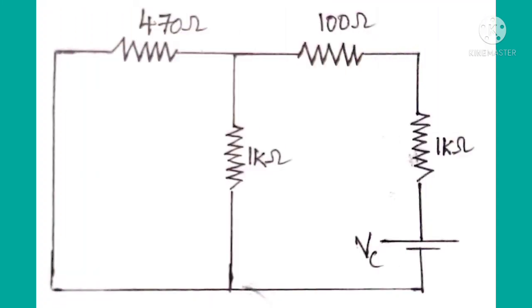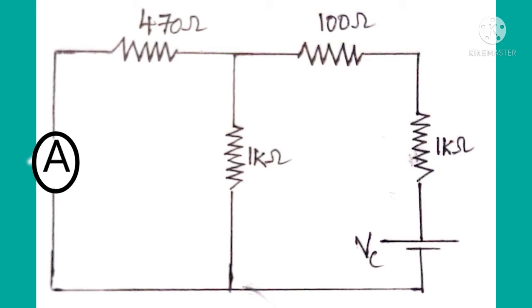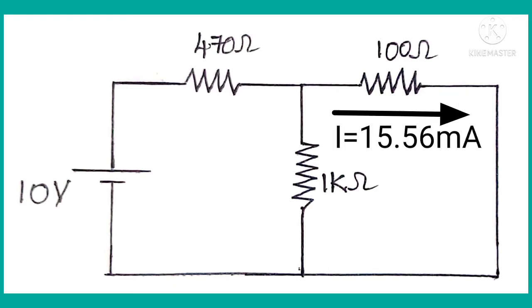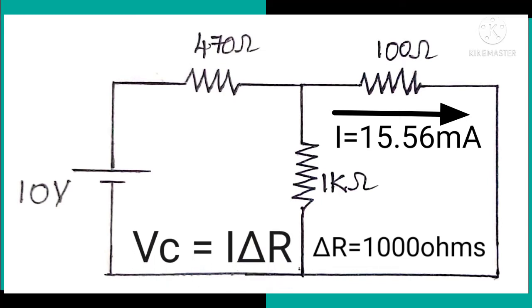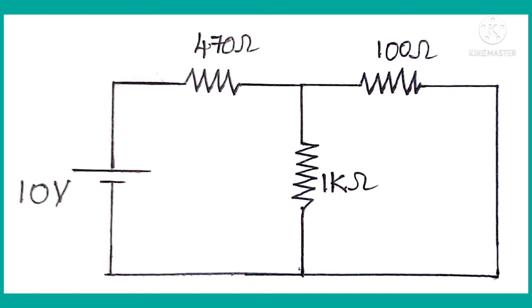To obtain this change in current using compensation theorem, we connect a compensating voltage source in series to the 1 kilo ohm resistor and replace the original source with a short circuit. We then find the current flowing through 470 ohms, with the positive terminal of the ammeter connected to 470 ohms and the negative terminal connected to ground. The compensating voltage is found by assuming the current through 100 ohms in the first circuit as I, which is 15.5 milli amperes, and multiplying it by the change in resistance delta R of 1000 ohms.